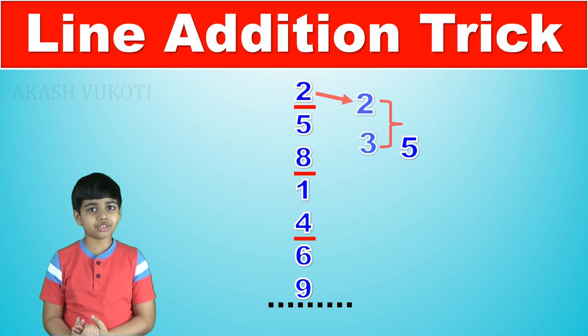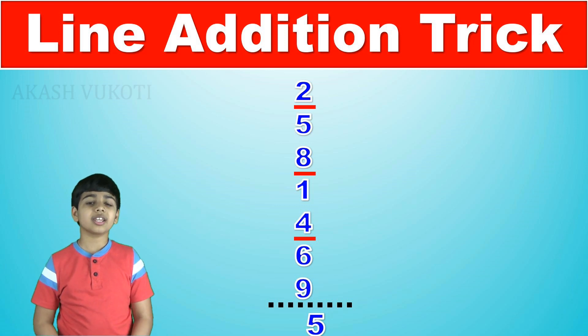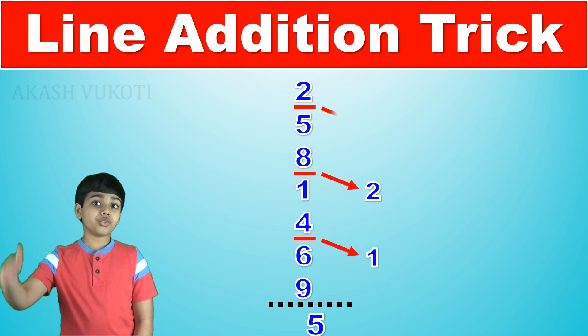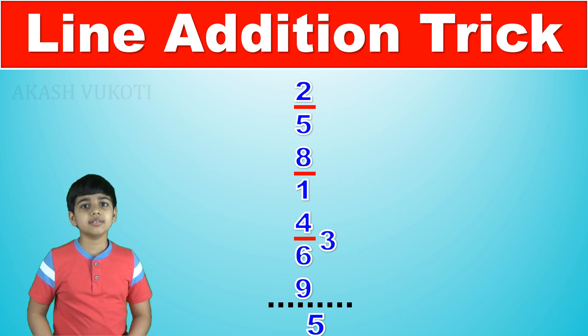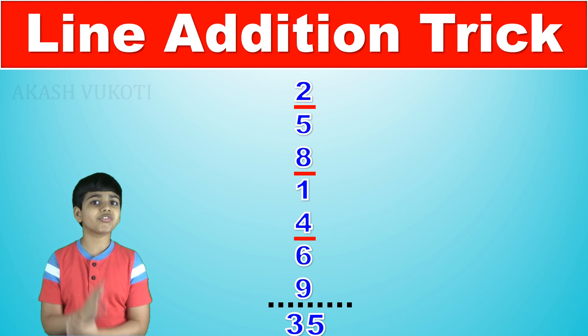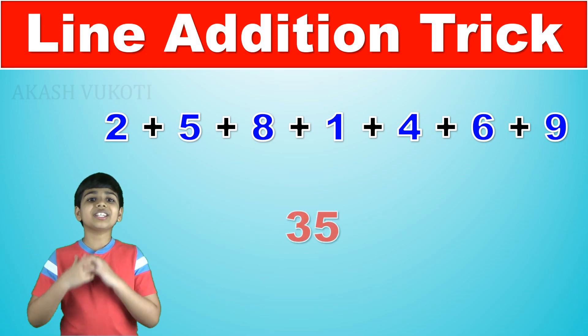Then we simply check how many lines we drew, well we drew 3 lines. So 3 is the first digit of our answer meaning that 2 plus 5 plus 8 plus 1 plus 4 plus 6 plus 9 is equal to 35.